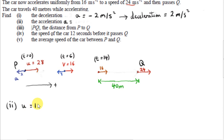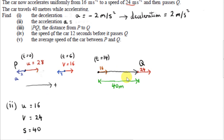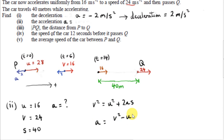We can think of the distance S as a vector whose tail is at the origin — the start of the last leg — and whose head is at the car's final position. It's a positive vector, pointing in the positive direction. We need the acceleration. The formula that connects these four quantities is V squared equals U squared plus 2AS. Rearranging for A: subtract U squared from both sides, then divide both sides by 2 times S. We get 24 squared minus 16 squared, divided by 2 times 40.